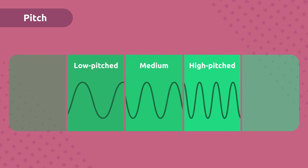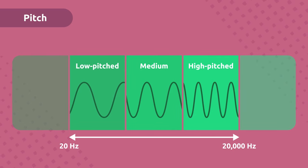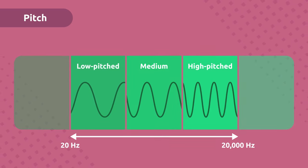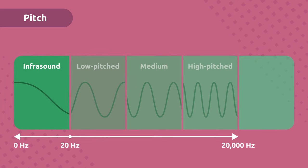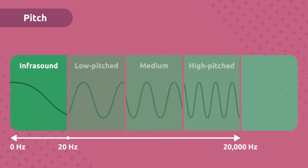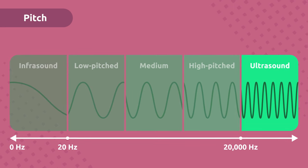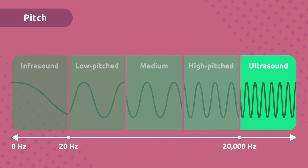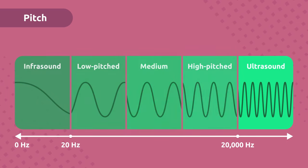Our ear is only capable of hearing sounds between 20 Hertz and 20,000 Hertz. Sound frequencies below 20 Hertz are too low to be heard, and we call them infrasound. However, if the frequency exceeds 20,000 Hertz, we have ultrasound, which can only be heard by some animal species such as dogs or bats. Isn't that amazing?